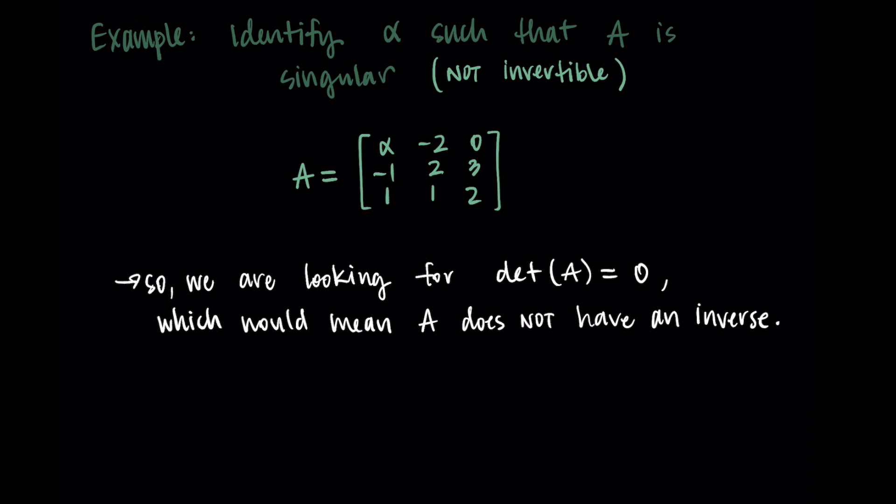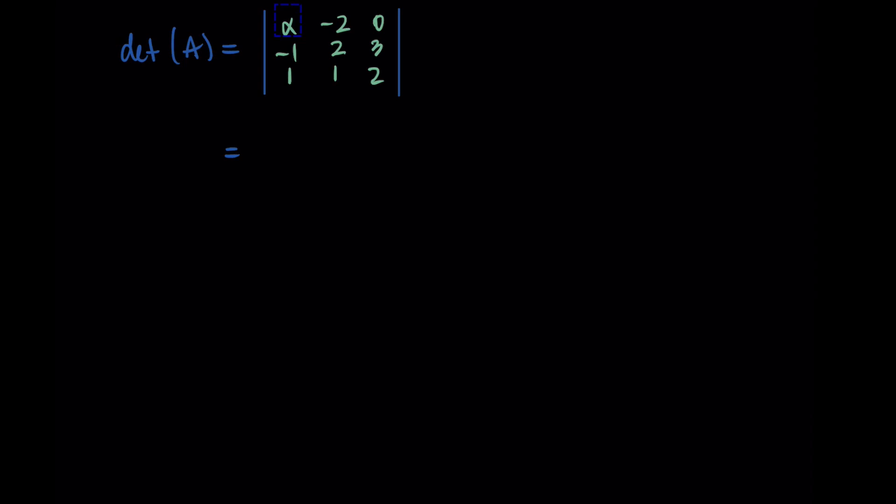So we're going to take the determinant of this matrix, set it equal to zero and solve for alpha. So I'm taking the determinant of A, which is the determinant of this three by three matrix. And I just need to expand this out using the formula. So if you want, you could pause the video here and try this on your own. This is some good practice with the determinant, see how it goes, and then come back and we'll do it together.